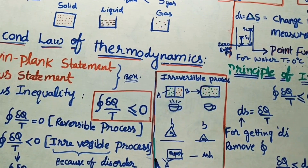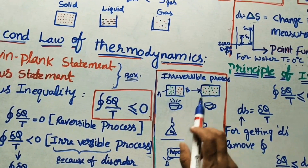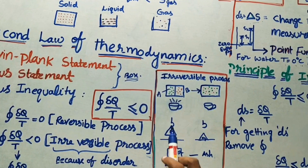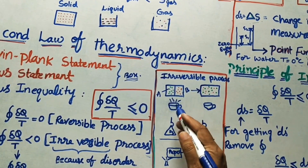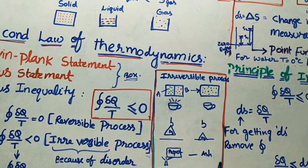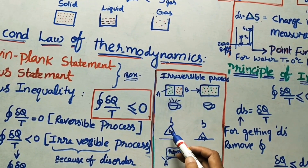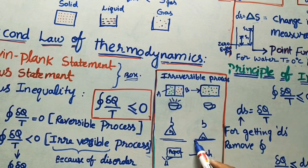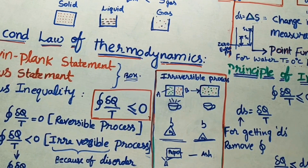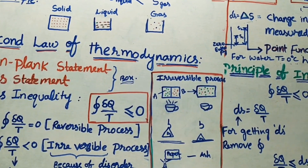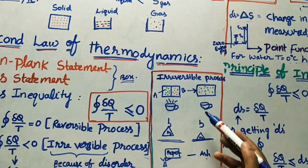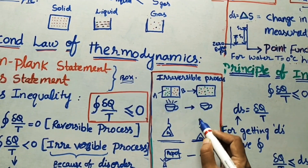Examples of spontaneous processes: First, two gases A and B separated by a wall — when the wall is removed, they mix spontaneously. Second, a very hot cup of tea cools down on its own over time. Third, a 5 kg weight falls to the ground quickly without any external push. Fourth, burning paper turns to ash — also a spontaneous process.